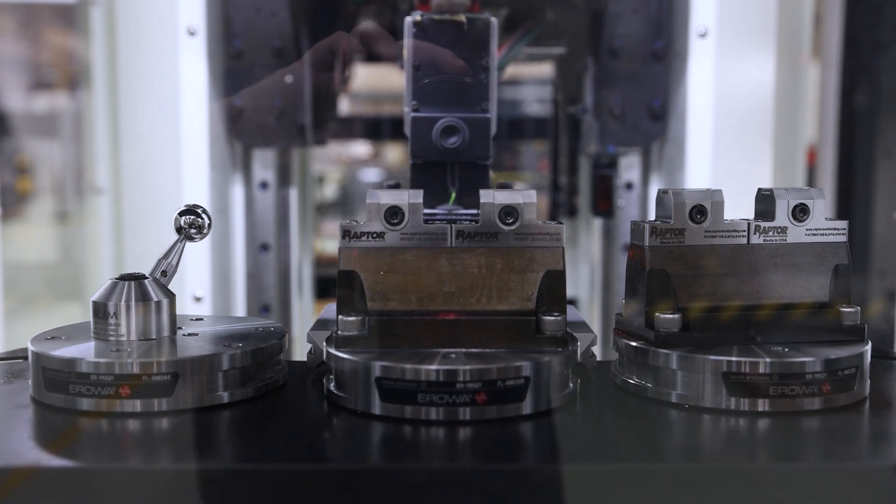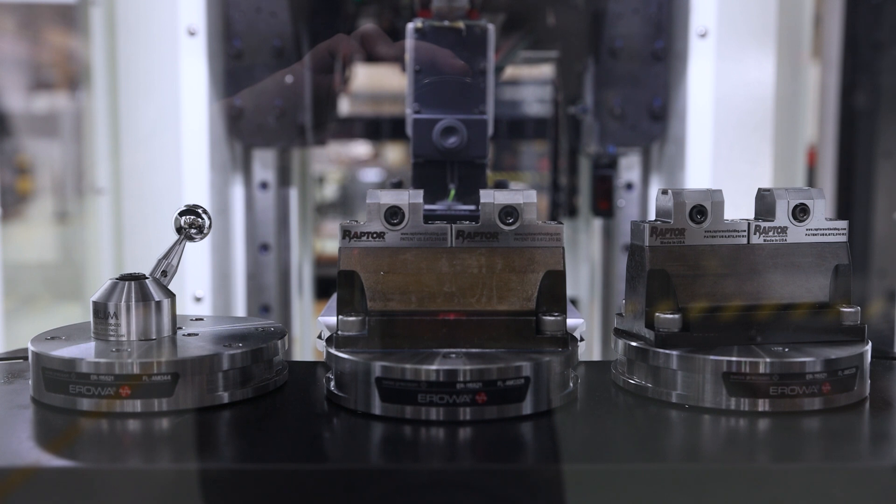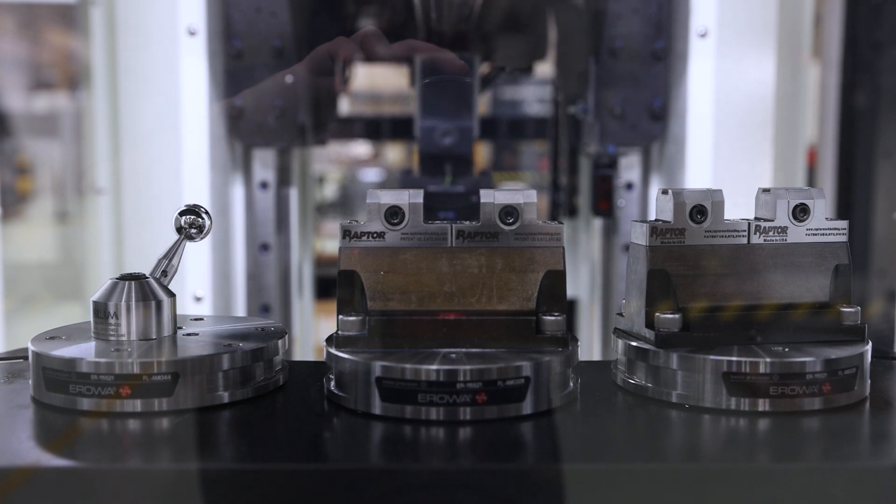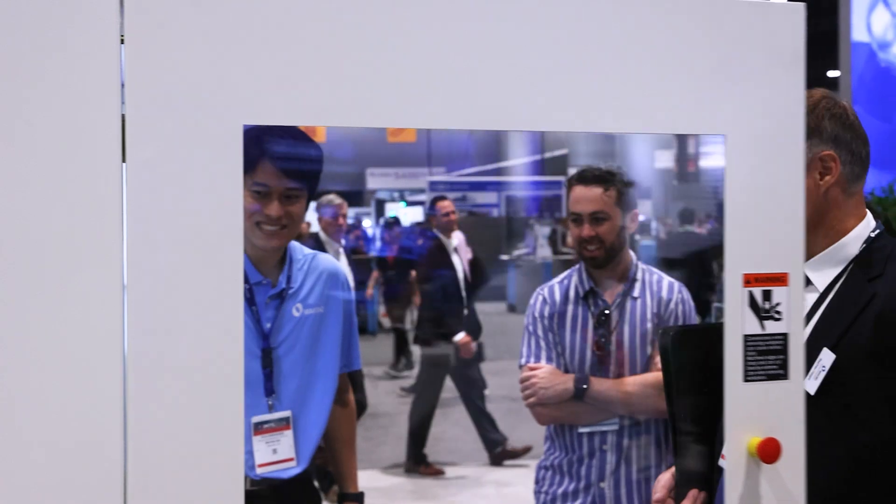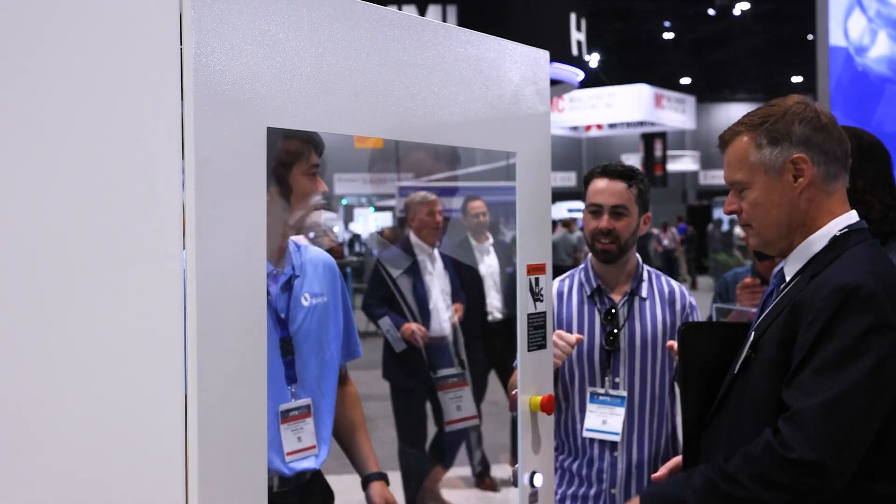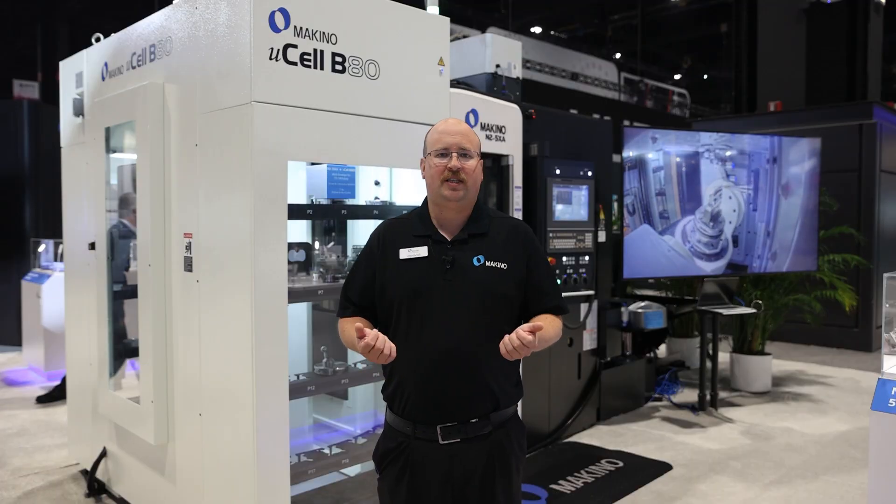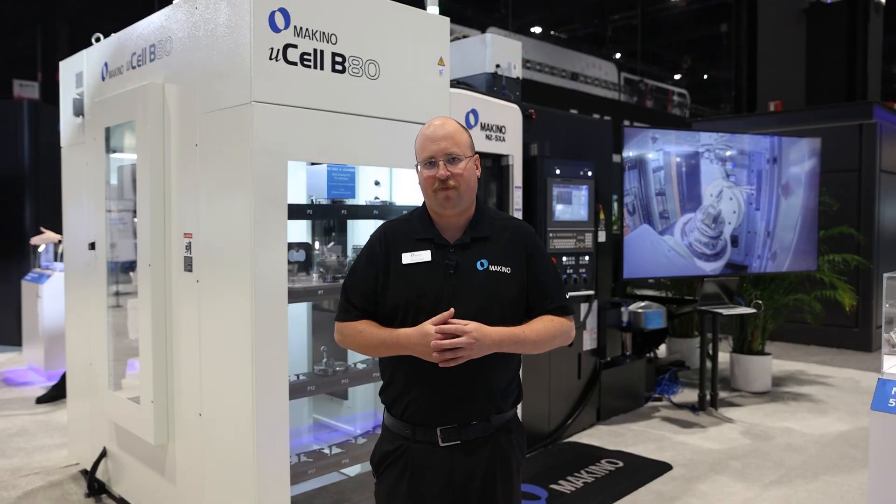Some nice features on the MicroCell B80 are the cool and drip trays, access to the entire unit by opening the doors so we can access all pallets, and we also have a load station for easy ergonomic loading of pallets.